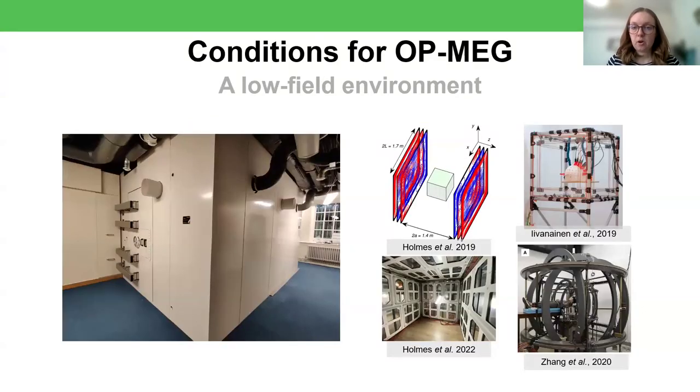So how do people get around these problems of non-linearity and CAPE? Well, firstly, OPM MEG is performed in a low-field environment. So this can mean passive magnetic shielding, like this magnetically shielded room, this is a photo of our one at UCL, which has been specifically designed to keep the low-frequency magnetic field as small as possible in order for it to be used with OPMs. But it can also mean active magnetic shielding. So here are just a few examples of where people have used electromagnetic coils with currents optimized to create a magnetic field equal and opposite to the background magnetic field in the center of the coils. So that effectively cancels out that remnant magnetic field.